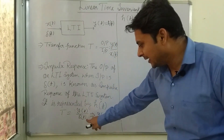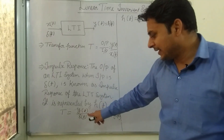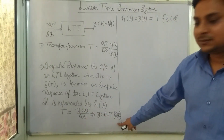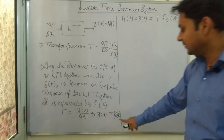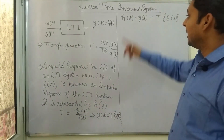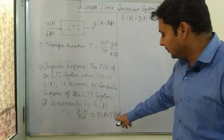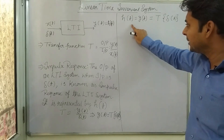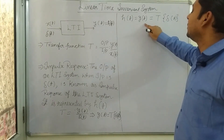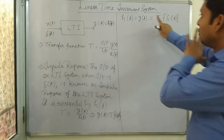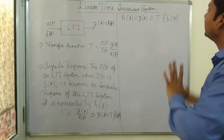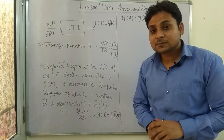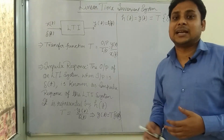Now you can see the transfer function is output upon input. The input is δ(t) and the output is y(t), so the output y(t) equals T applied to δ(t). This output, when input is δ(t), is known as h(t) — the impulse response of the system. So h(t) equals y(t), which equals T[δ(t)].